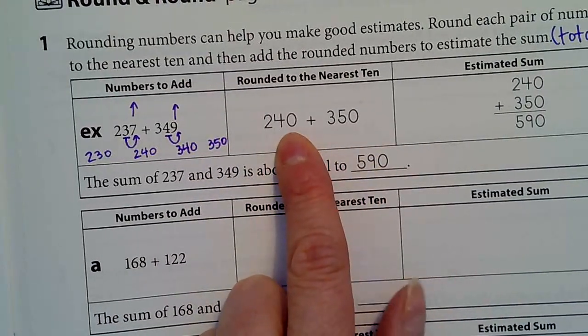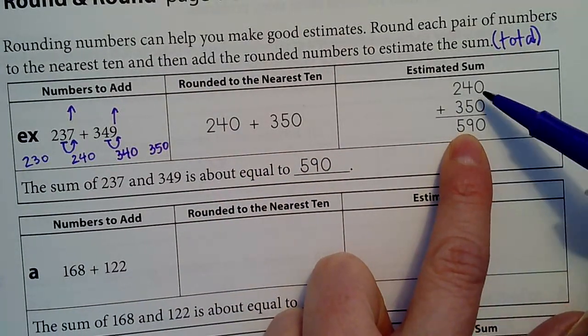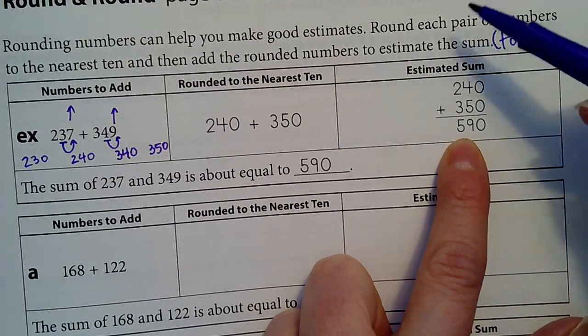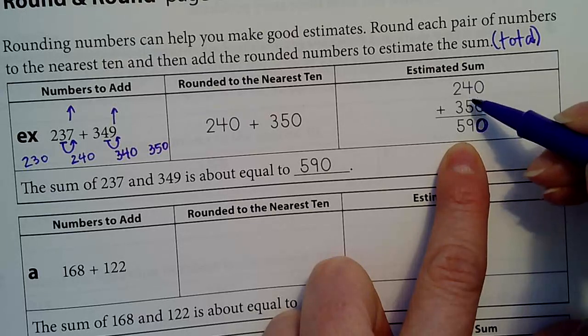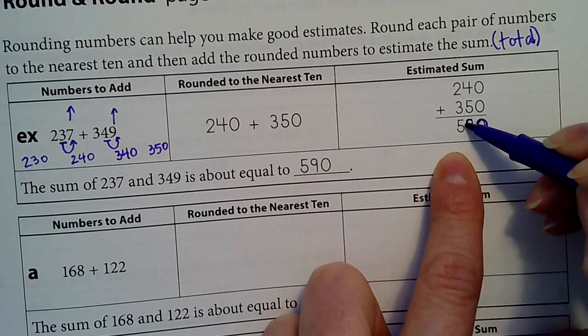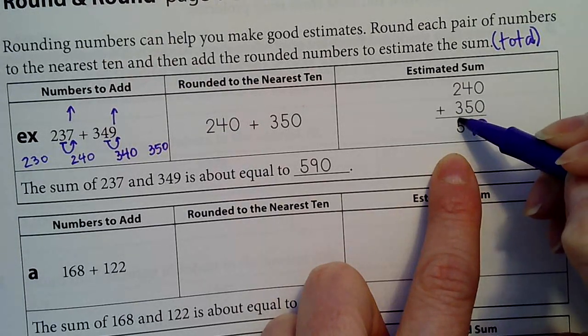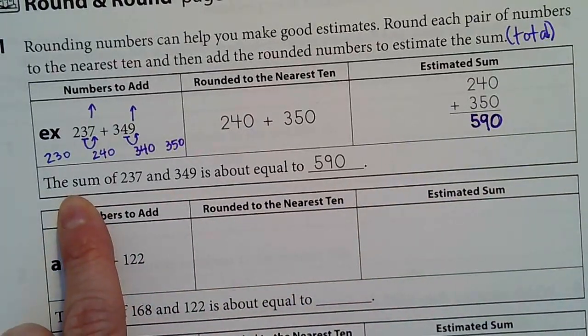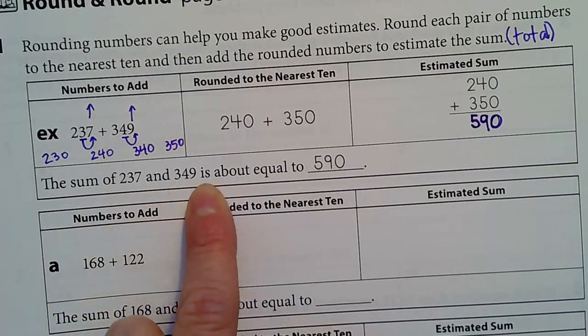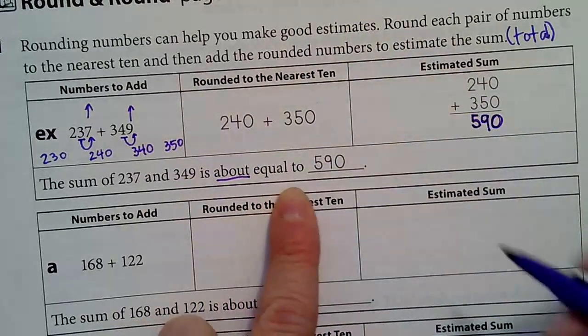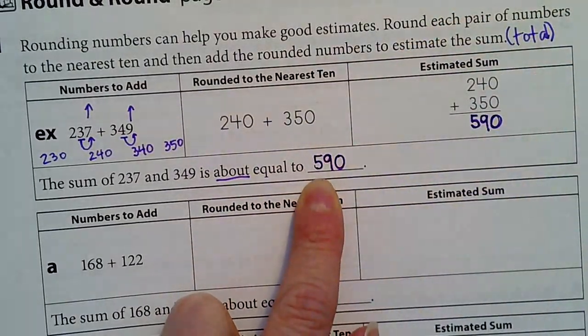Then they took these two numbers and added them together over here: 240 plus 350. I can add zero and zero and get zero. I can add four and five and get nine. Then I can add two and three and get five. So that's where my answer goes. The sum of 237 and 349 is about equal to 590 because this is an estimate.